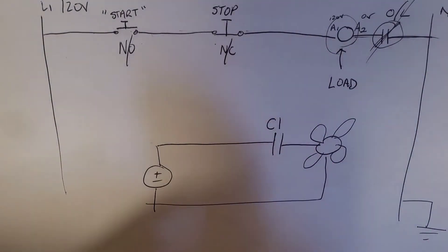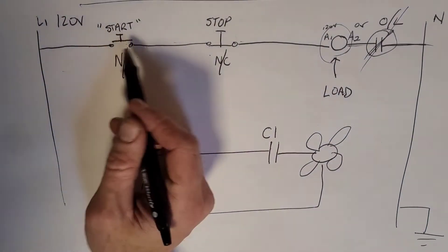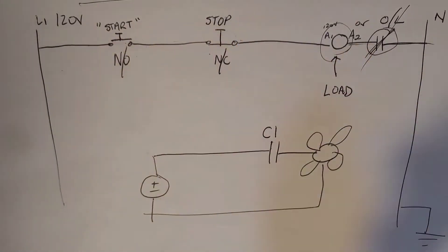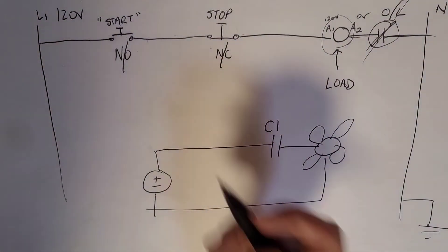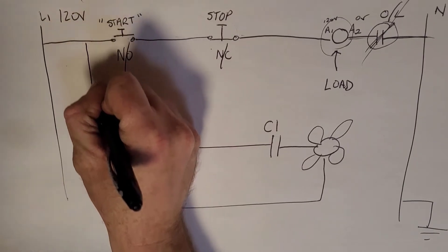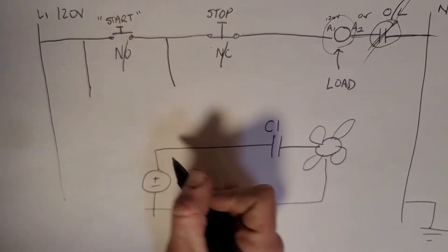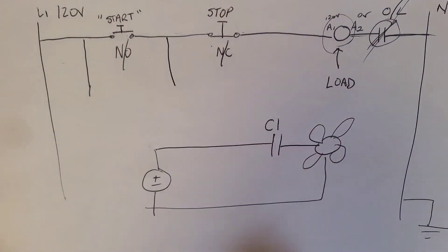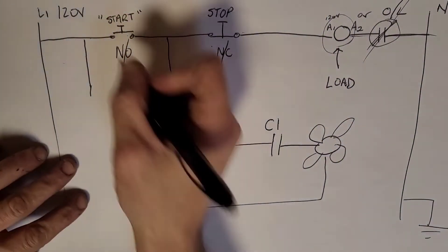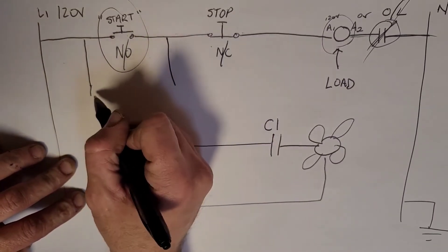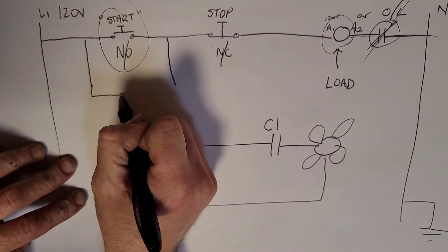But I don't want that. I want this to stay on, but it won't. Why? Here's why: these are momentary push buttons. When you push this in, this circuit closes. When you let go, that circuit opens. What we can do is make a parallel branch. When you say a parallel branch in controls, I want you to think OR. We're going to make an OR branch.